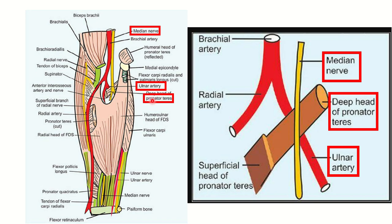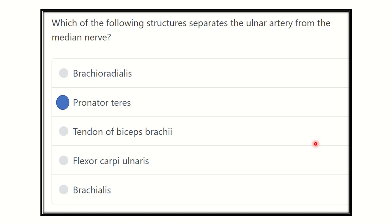The name of that muscle is the pronator teres. Here we can see this is the pronator teres — there is a cut edge of the pronator teres. In the second picture, we can see the ulnar artery and median nerve, and between these two structures there is the pronator teres muscle. So the pronator teres muscle separates the ulnar artery from the median nerve.